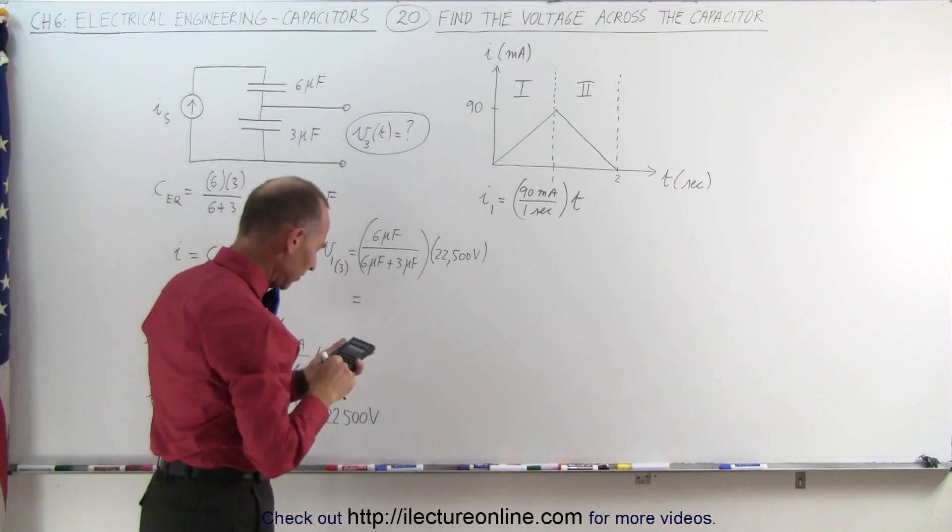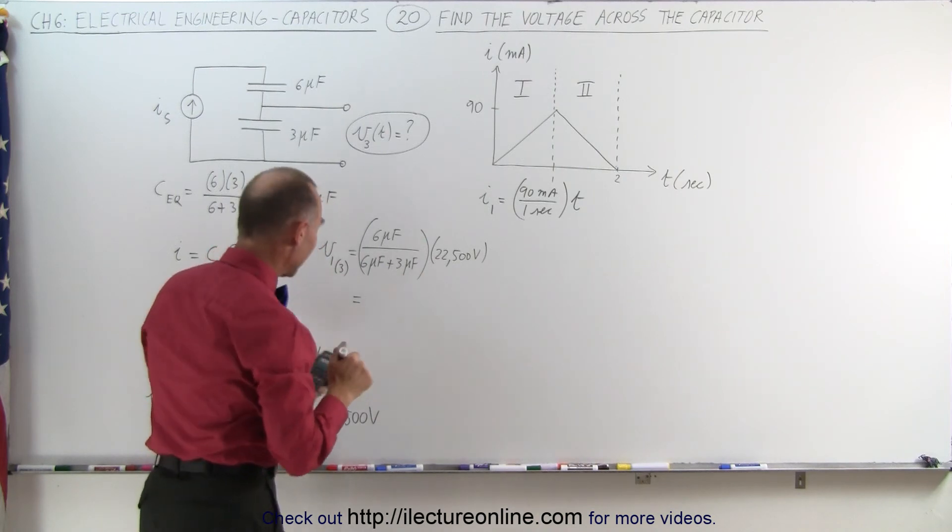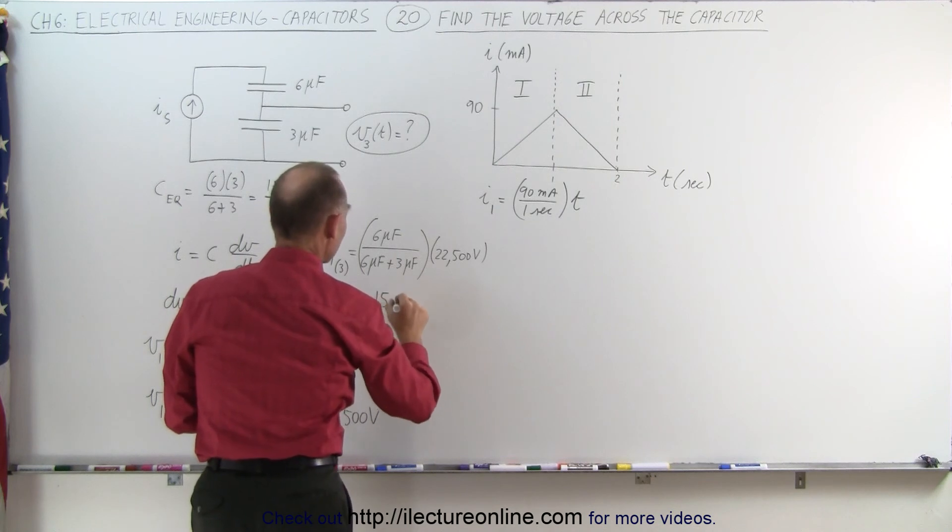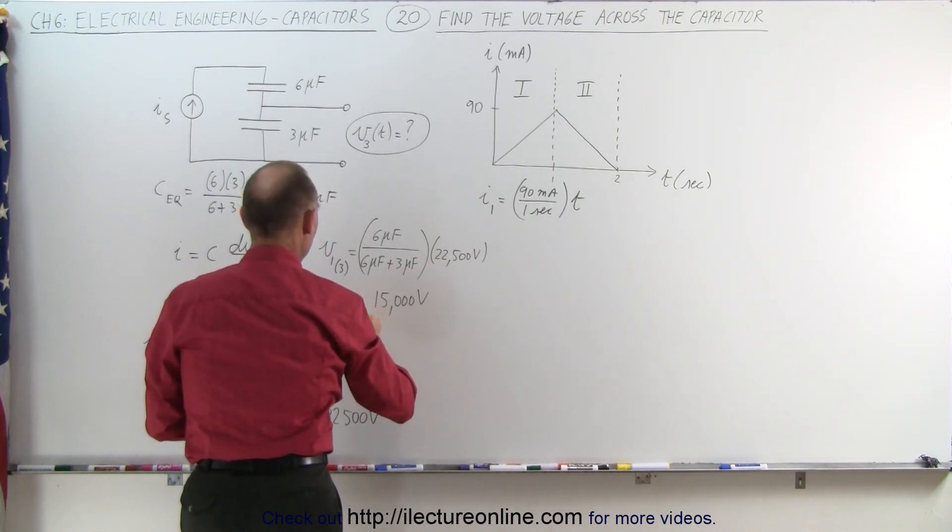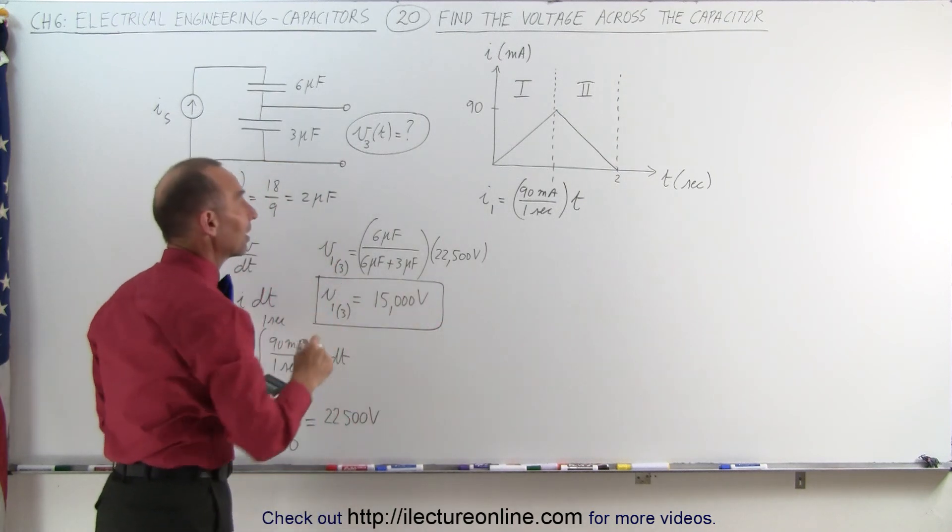That would be 2 thirds of that, so divided by 3 times 2, 2 equals, and that would be 15,000 volts across the 3 microfarad capacitor after 1 second.